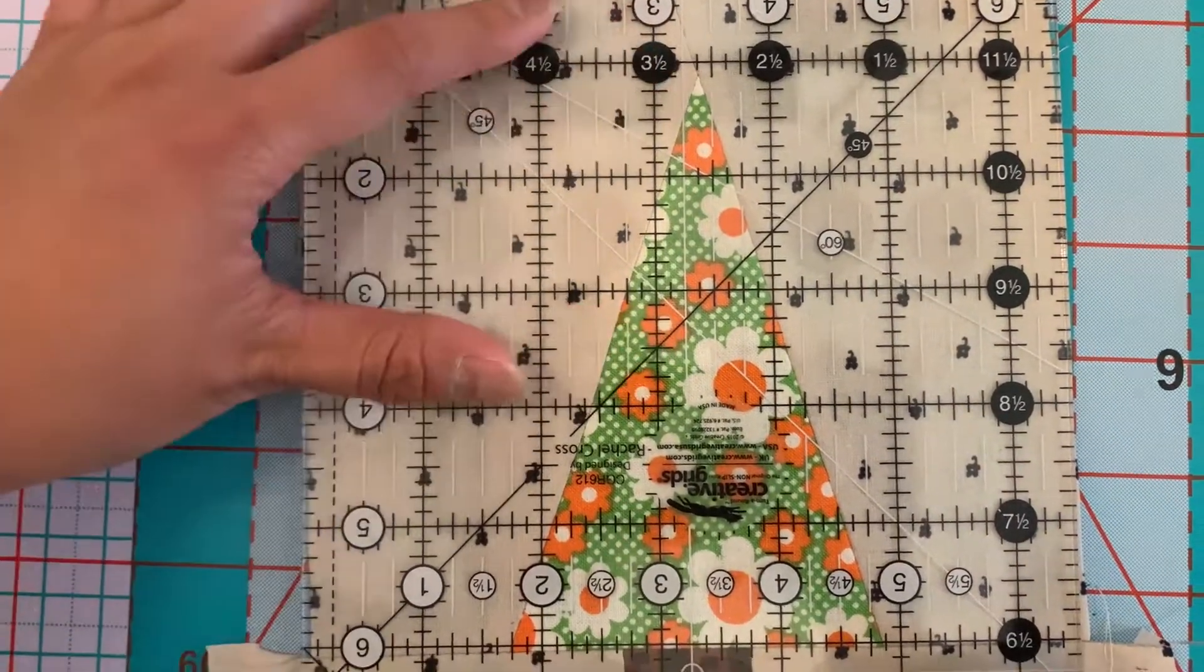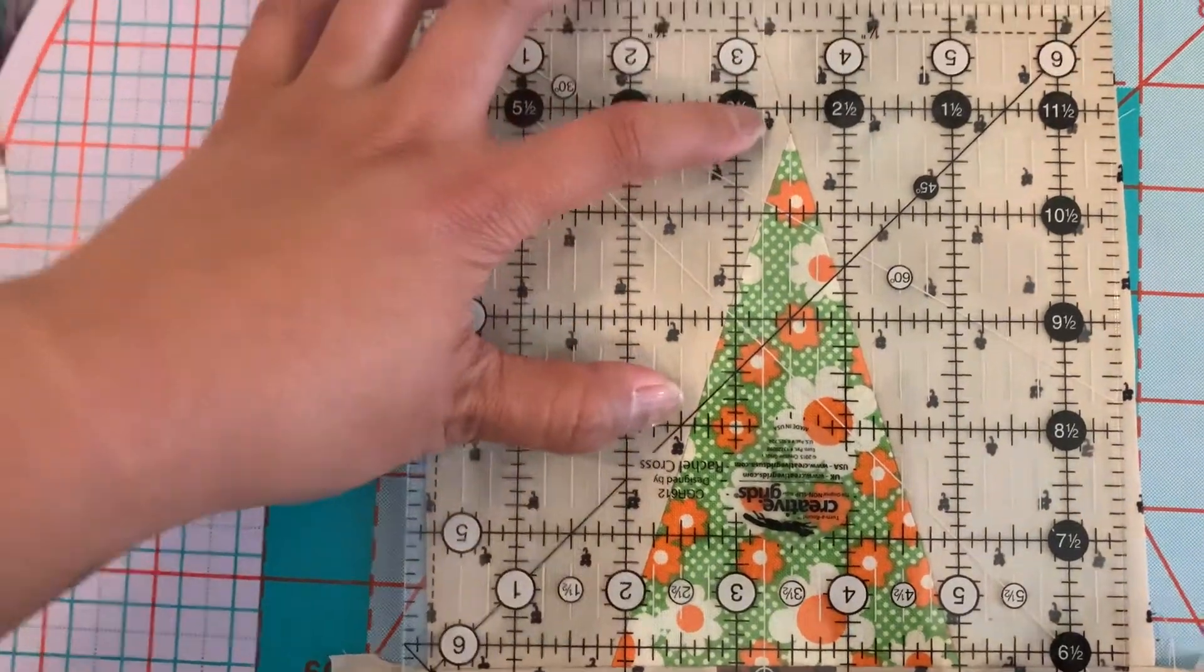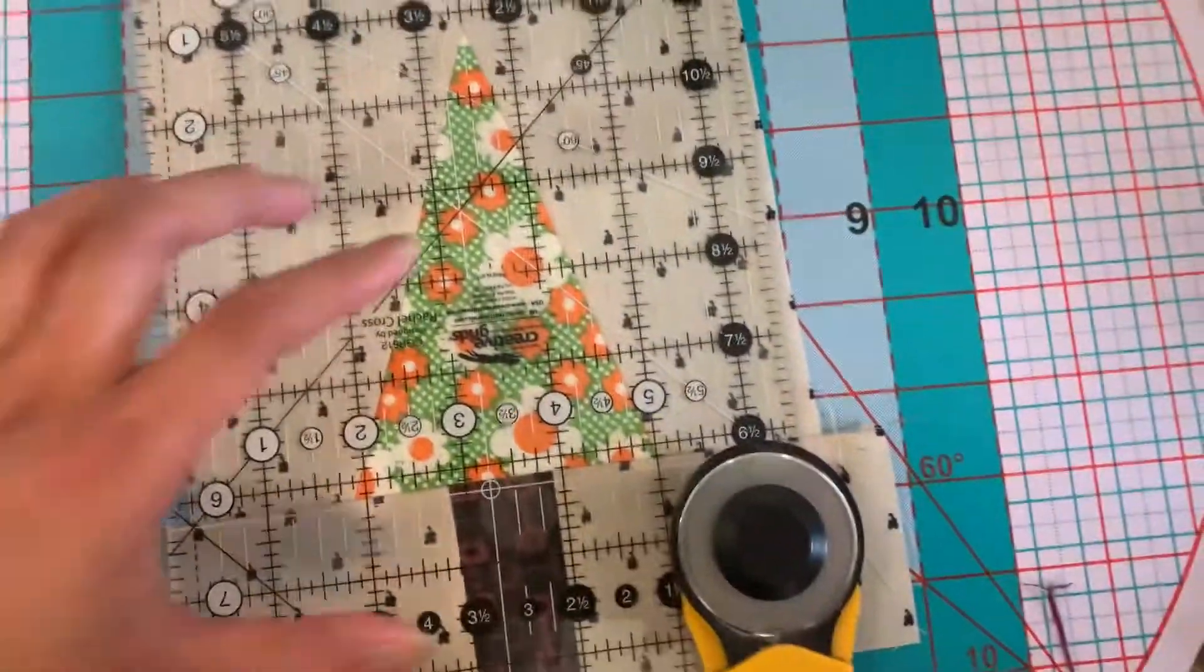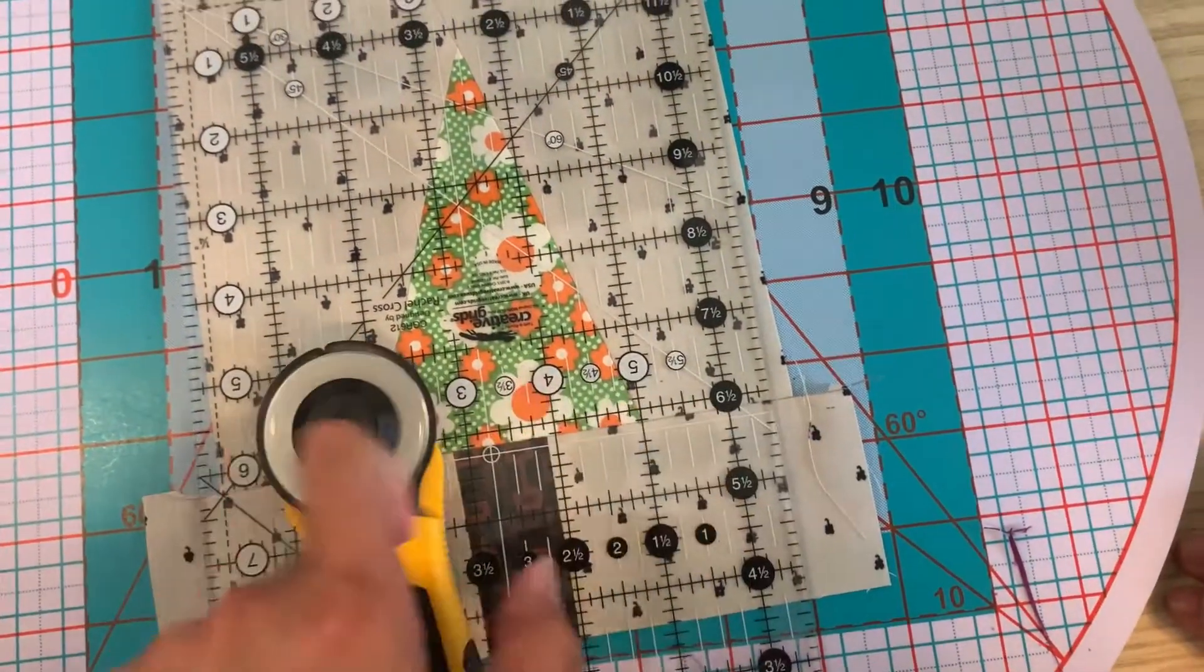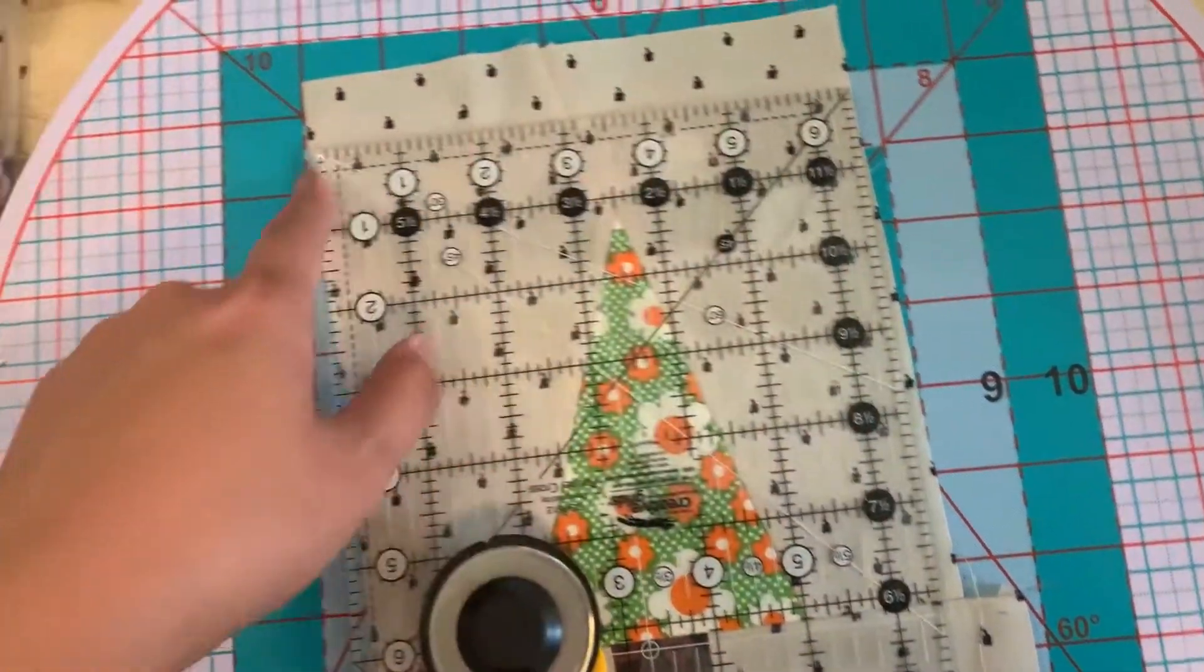Oh actually, two and three quarters is right there, so two and three quarters is right there. So I'm lining them up and what I'm going to do is I'm going to trim. Trim that, I'm going to trim him, and I'm going to trim there.